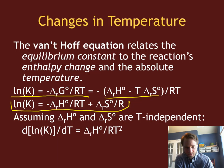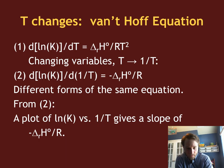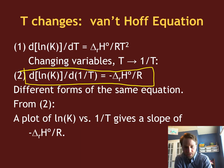And I have d ln of K dT is equal to delta H divided by RT squared. And then rewrite this equation by changing some variables here, and have T going to 1 over T so that I can simplify this as d ln of K d(1/T) is equal to minus delta H over R.